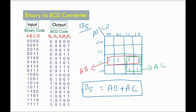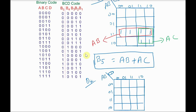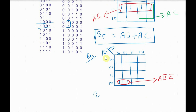Similarly, we have to find b4, b3, b2 and b1. Now we will find b4. Again for b4, we have to draw the Kmap. For b4, only two cases have output 1 — that is for 1000 and 1001. So these are the two cells, and while grouping we have only these two cells. The value is a·b̄·c̄. Therefore, b4 is equal to a·b̄·c̄.